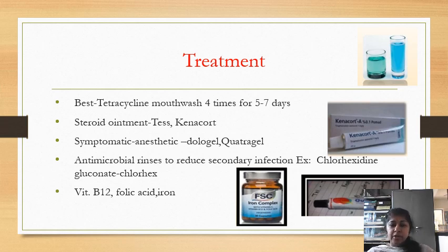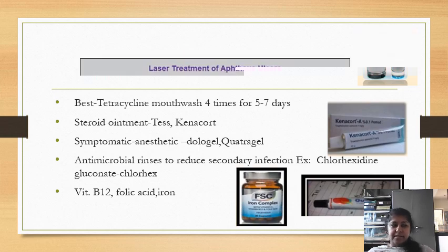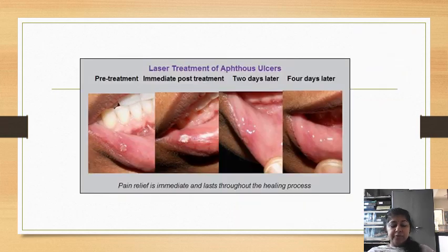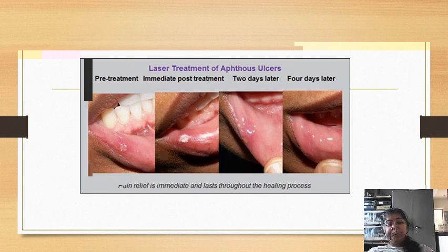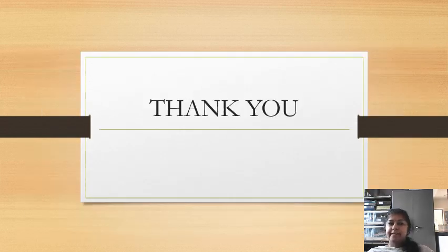Vitamin B12, folic acid, and iron supplements can be used for reduction in size of aphthous ulcers. This photograph shows laser treatment for recurrent aphthous stomatitis — you can see how the lesion is disappearing after 4 days. Thank you all for listening.